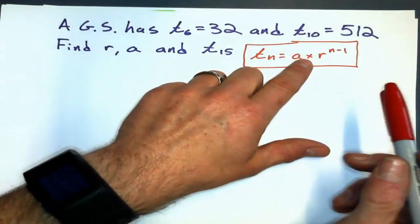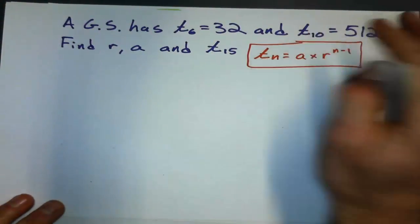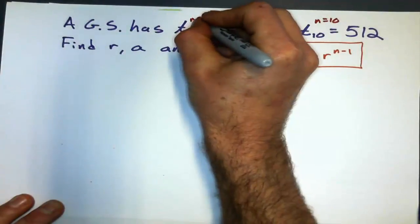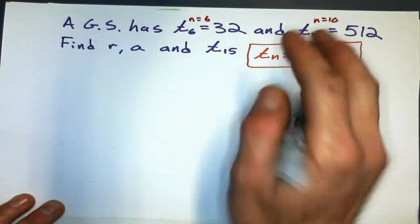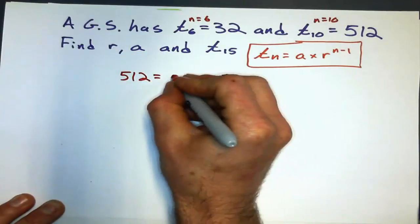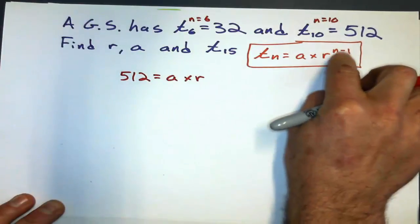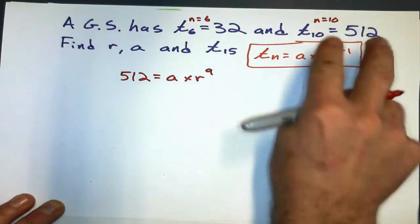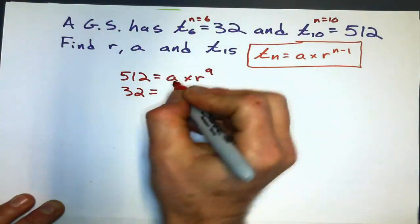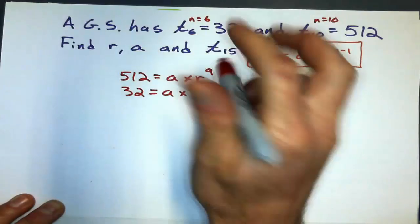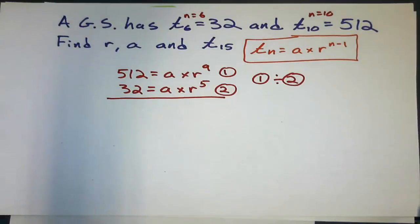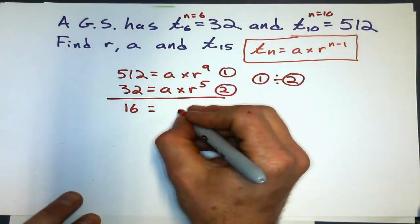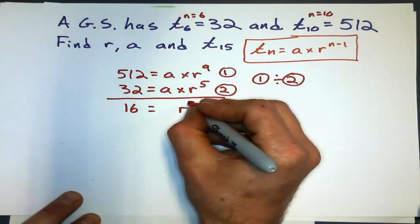We're going to use the general formula, substituting these values in. Remember, n equals 10 for the 10th term and n equals 6 for the 6th term. So on top I'll write 512 equals a times r to the power of 9, and below 32 equals a times r to the power of 5. Dividing gives r to the power of 4, since 9 minus 5 is 4.